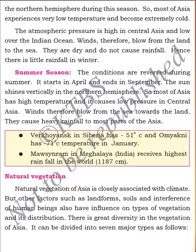Next, coming down to vegetation — the natural vegetation of Asia is closely associated with climate. Other factors such as soil and land also influence the types of vegetation, along with the influence of human beings. There is a great diversity in the vegetation of Asia, and it can be divided into seven major types.